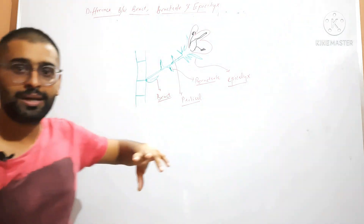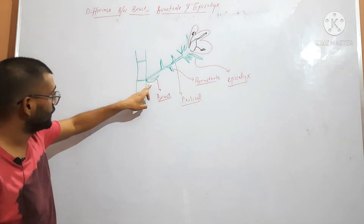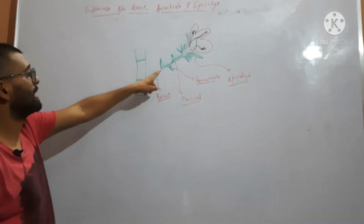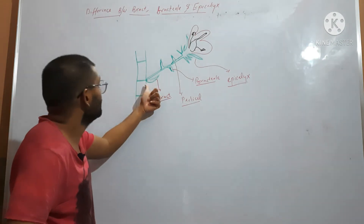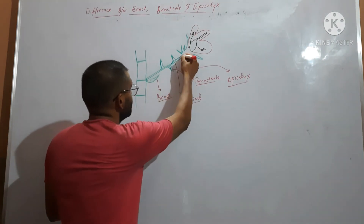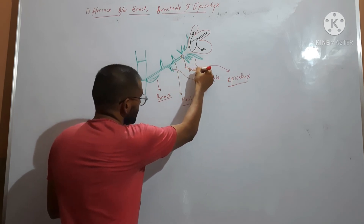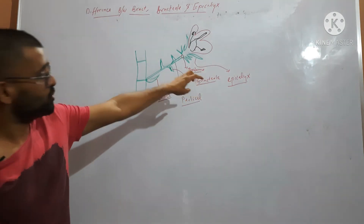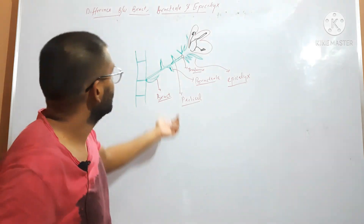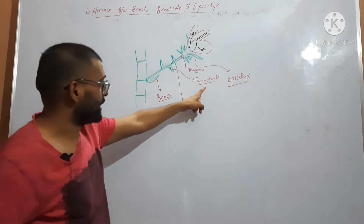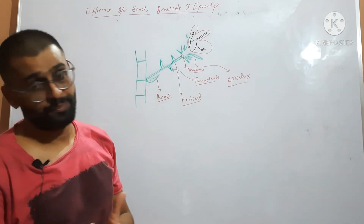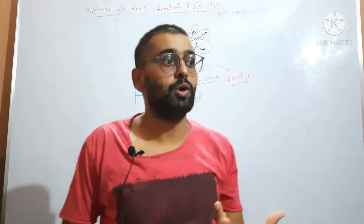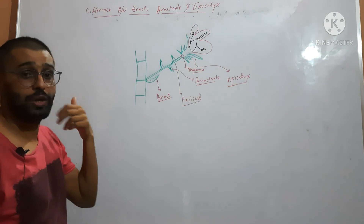Bracteole is a reduced leaf-like structure present on the pedicel, between the bract and the thalamus — here is the thalamus of the flower. Any reduced leaf-like structure present on the pedicel is called a bracteole. And epicalyx is a group of bracteoles that are present specifically below the calyx, forming a complete whorl below it. That is the difference between bracteole and epicalyx.